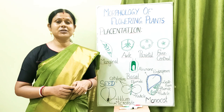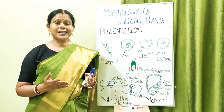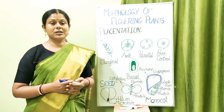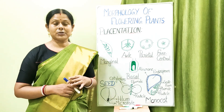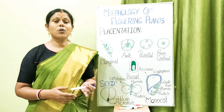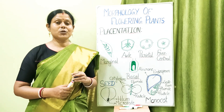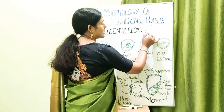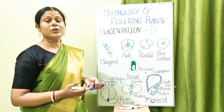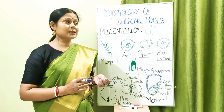What we did not discuss previously is the symmetry of the flower. Just as animals can be asymmetrical, radially symmetrical, or bilaterally symmetrical, flowers also have symmetry. Those flowers which can be cut in any plane into two equal halves are called actinomorphic flowers — similar to radial symmetry. Examples include china rose and chili.